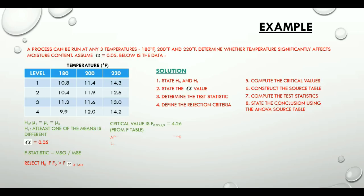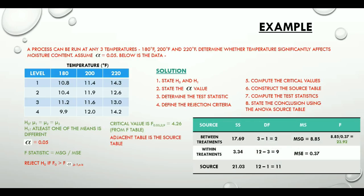Test statistic or F statistic from the table here is 23.92. So the conclusion is that F statistic 23.92 is greater than critical value of 4.26. Thus we reject the null hypothesis.